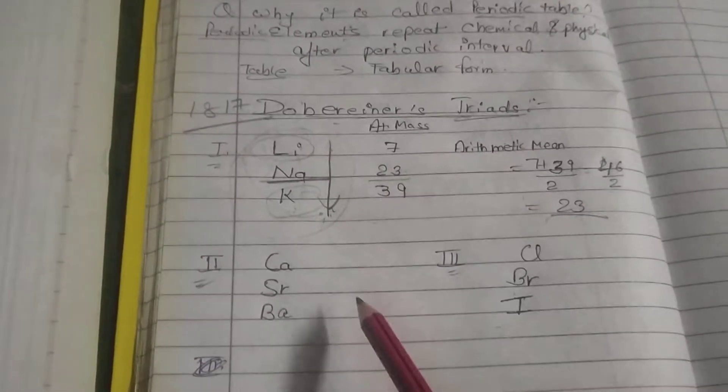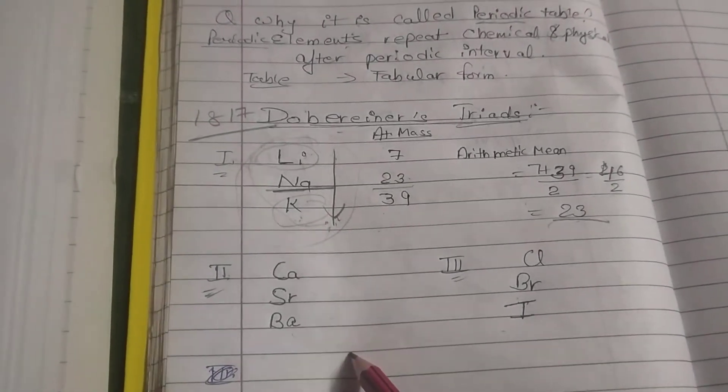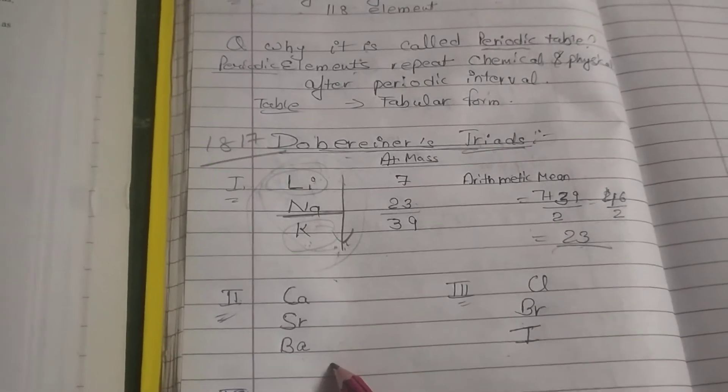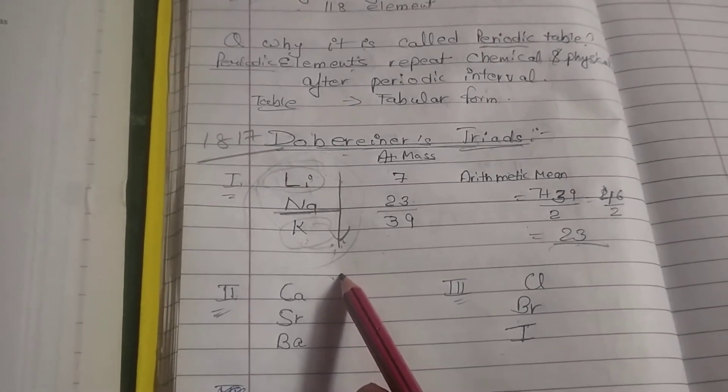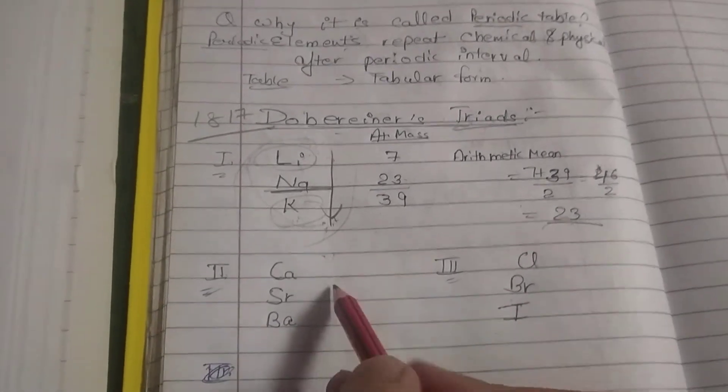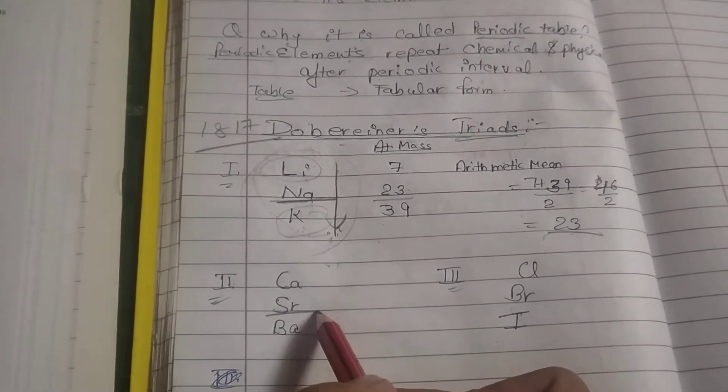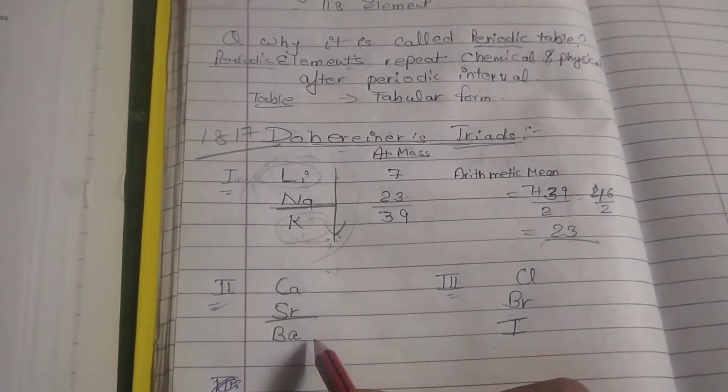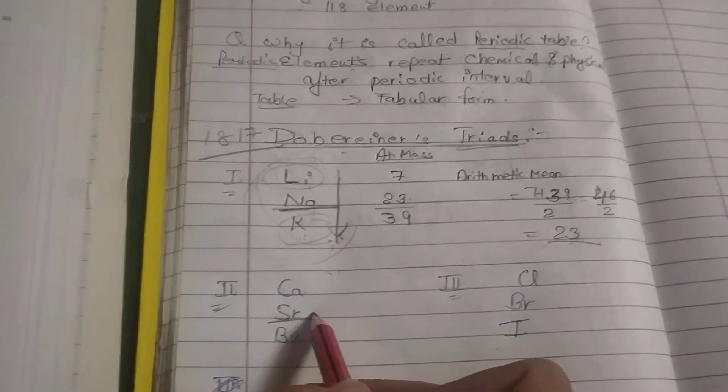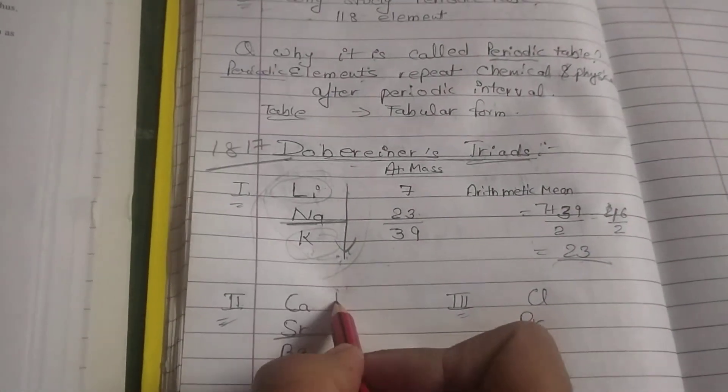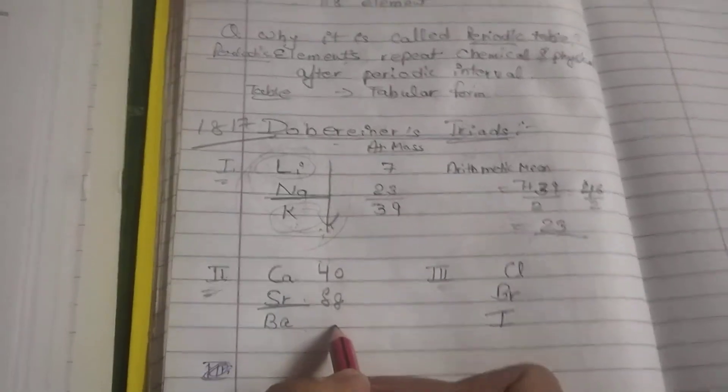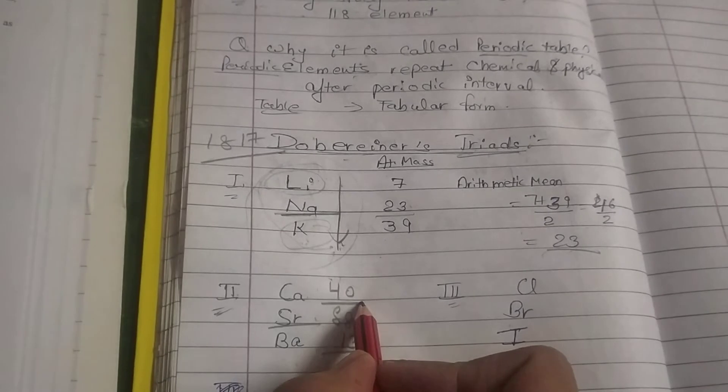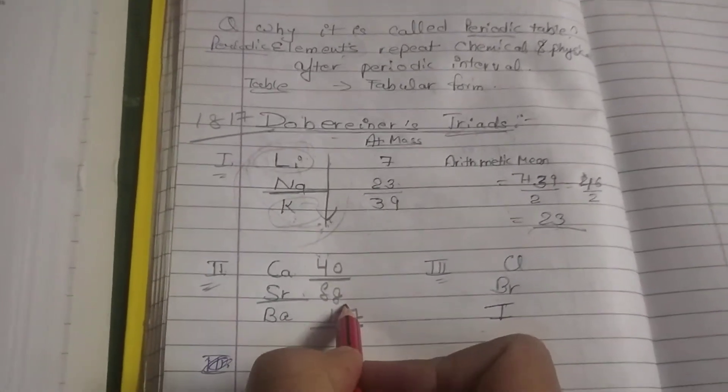In the same way, calcium, strontium, and barium are known as alkaline earth metals. They have the same chemical properties. If you find the atomic mass, calcium is 40, strontium is 88, and barium is 137. When you find the arithmetic mean of calcium and barium, it will be equal to the atomic mass of strontium.